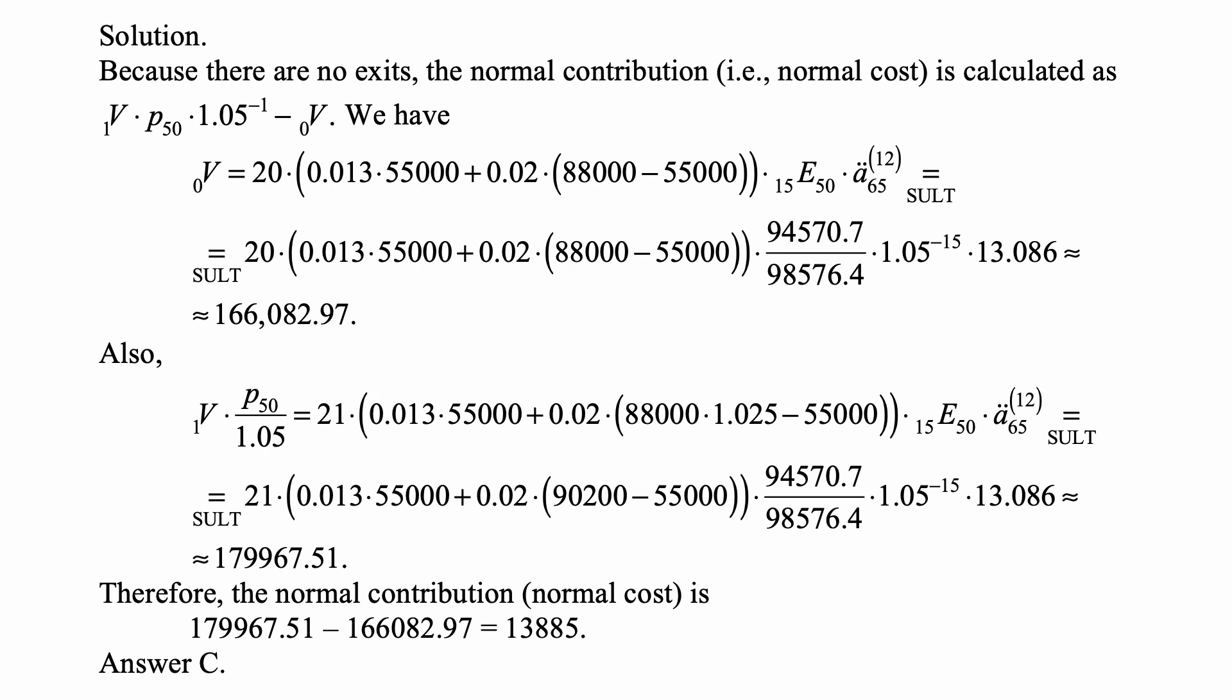And we calculate it to be 179,967.51. And the difference of the two quantities we just calculated is the normal cost of normal contribution. That's 13,885, and that's answer C.